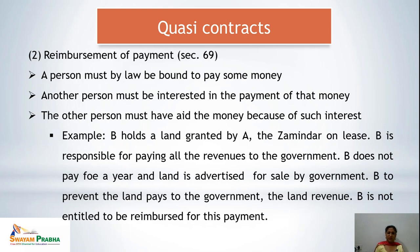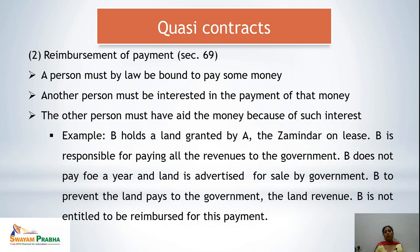Second is reimbursement of payment under Section 69. If any payment is made by a party under a quasi contract, it may be reimbursed — the person is bound by law to pay that money to the other party, but that other person must be interested in the payment and must have aided the money because of such interest. For example, B holds land from A the zamindar on lease. B is responsible for paying revenues to the government but does not pay for a year. The land is advertised for sale by the government. B, interested in the land, pays all the land revenues. B is not entitled to reimbursement from A because he was legally bound to pay that money.